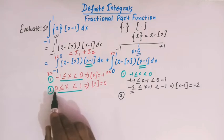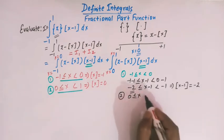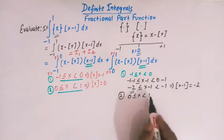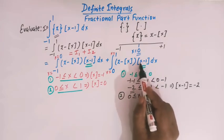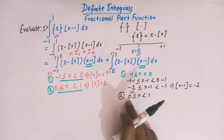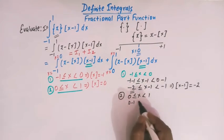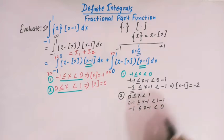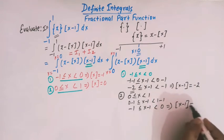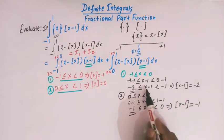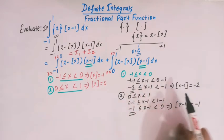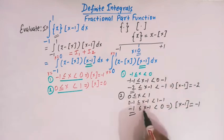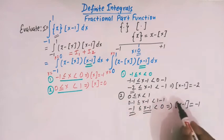For the second interval, x is greater than or equal to 0 but less than 1. Subtracting 1 throughout gives minus 1 less than or equal to x minus 1 less than 0. So the greatest integer of x minus 1 equals minus 1 as per the definition of greatest integer function. To summarize: when x minus 1 lies between minus 2 and minus 1, greatest integer of x minus 1 is minus 2; when it lies between minus 1 and 0, it is minus 1. These are all important concepts without which we cannot solve these types of problems.